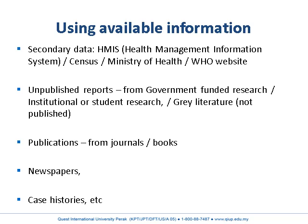Gray literature — unpublished data — can be obtained by contacting researchers at other institutions who may have relevant but unpublished findings. Published data has more value than unpublished data. Publications from journals, books, newspapers, and case histories published in journals can all be used as data sources.